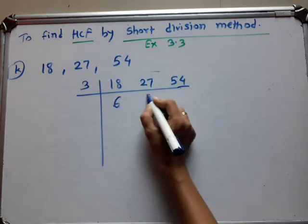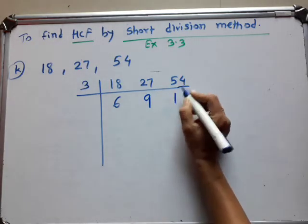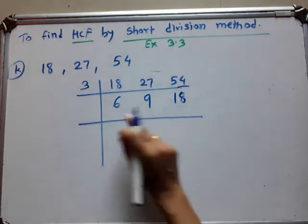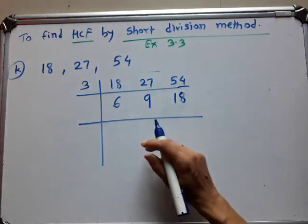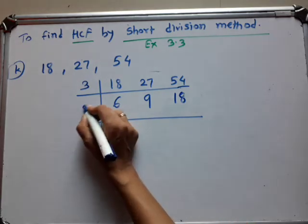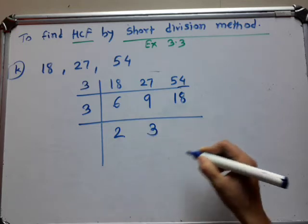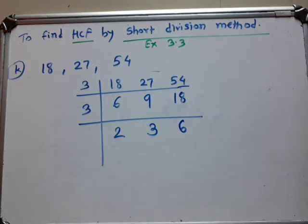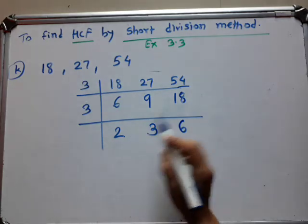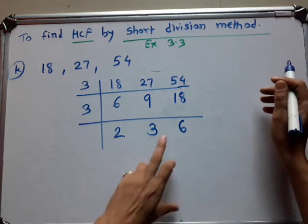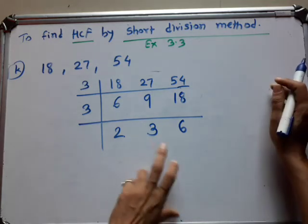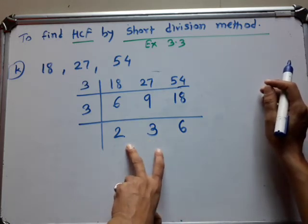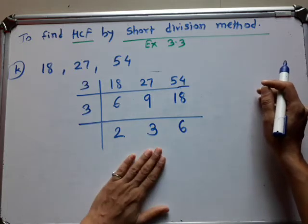So 3 times 6 are 18, 3 times 9 are 27, and 3 times 18 are 54. So here we get the numbers 6, 9, and 18. Again, all these numbers are divided by 3. 3 times 2 are 6, 3 times 3 are 9, and 3 times 6 are 18. Now you have to see here — this number is not divided by 2, and not all numbers come in the table of 3 either.